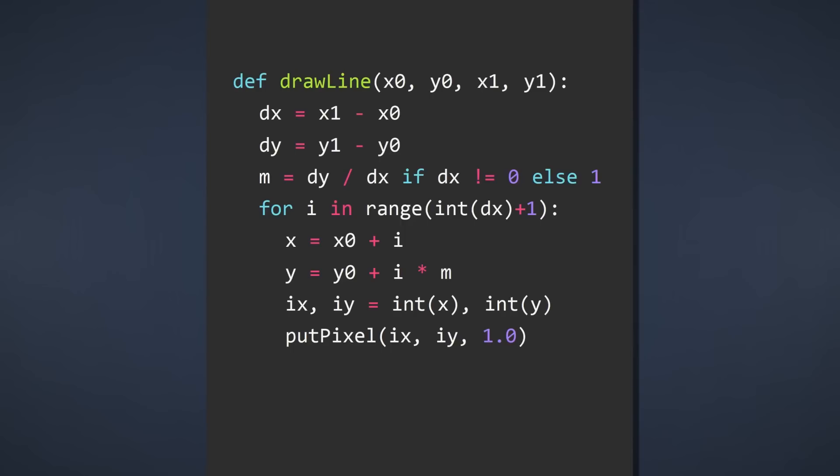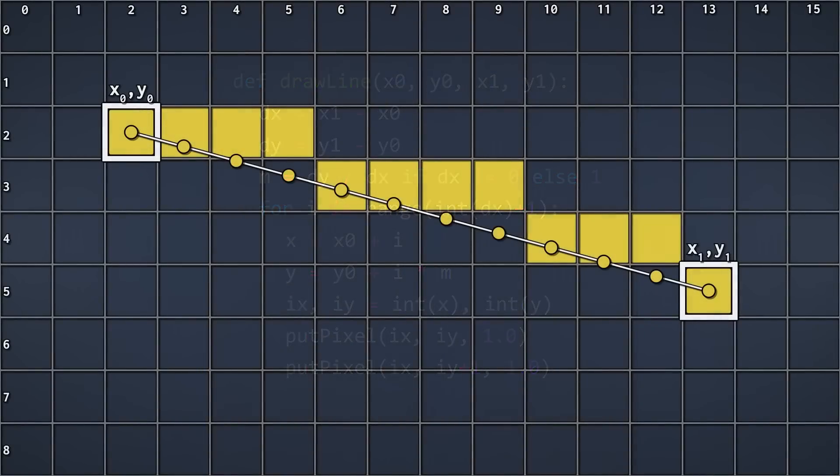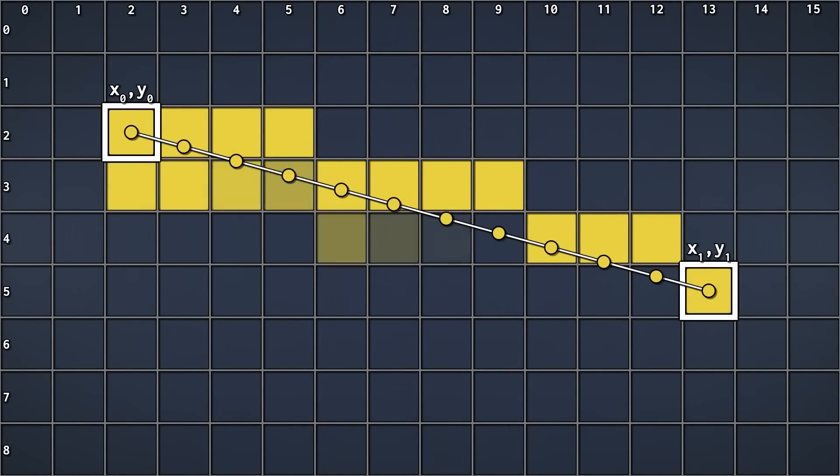Moving on, we also wanted to place pixels below each plotted point. To achieve this, we simply place another pixel at each iteration, but increment its y-coordinate by 1. And there we go. Now we have a pixel above and below each plotted point on our line.